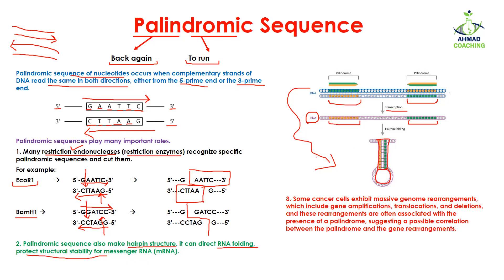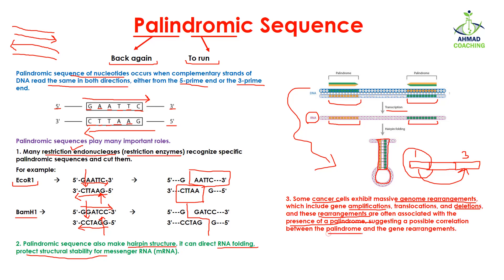Another function of palindromic sequences is seen in cancer cells. Cancer cells exhibit massive genomic rearrangement, meaning genes are rearranged — they may be amplified, so one gene now has two copies; they may be translocated, meaning a gene originally at chromosome one is now at chromosome three; or there may be deletion, where a gene is deleted. Studies have shown that this rearrangement may be associated with the presence of palindromic sequences, suggesting a possible correlation between palindromes, gene rearrangement, and cancer.